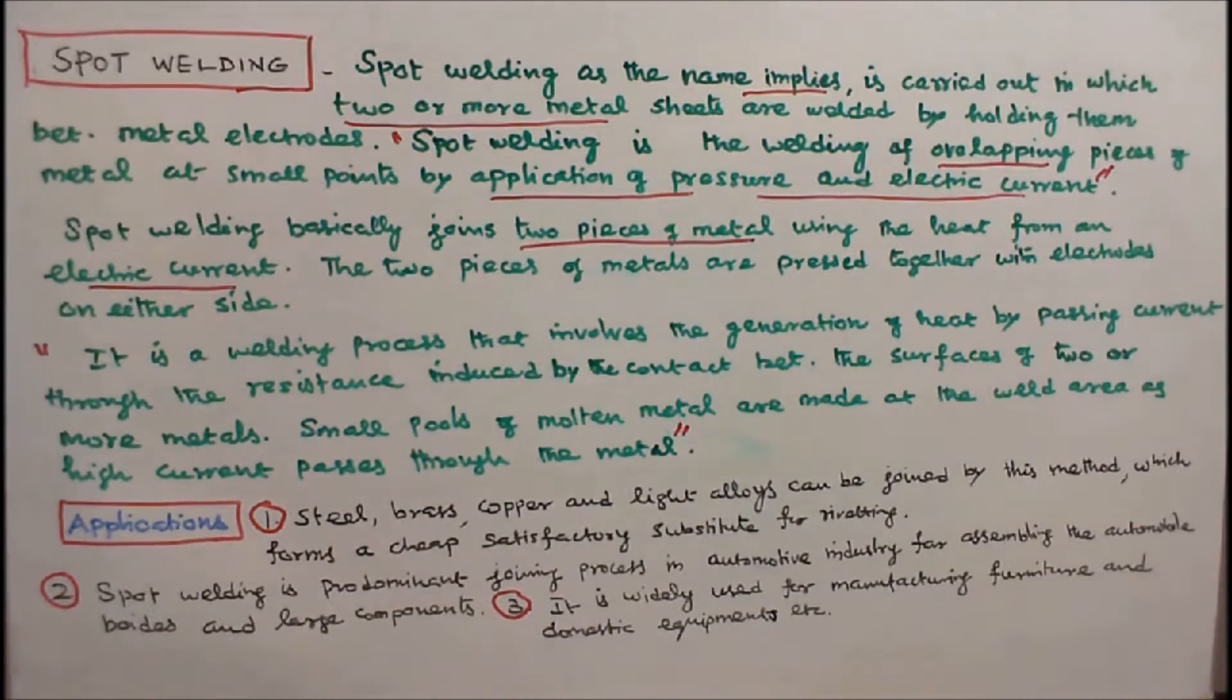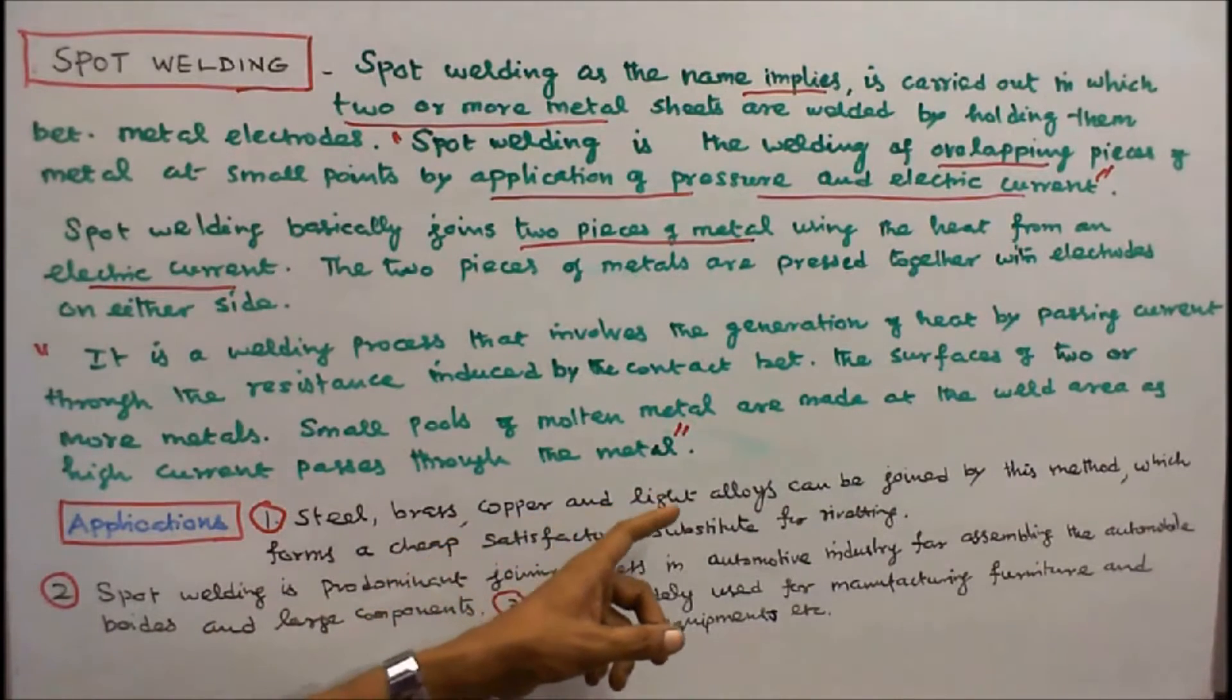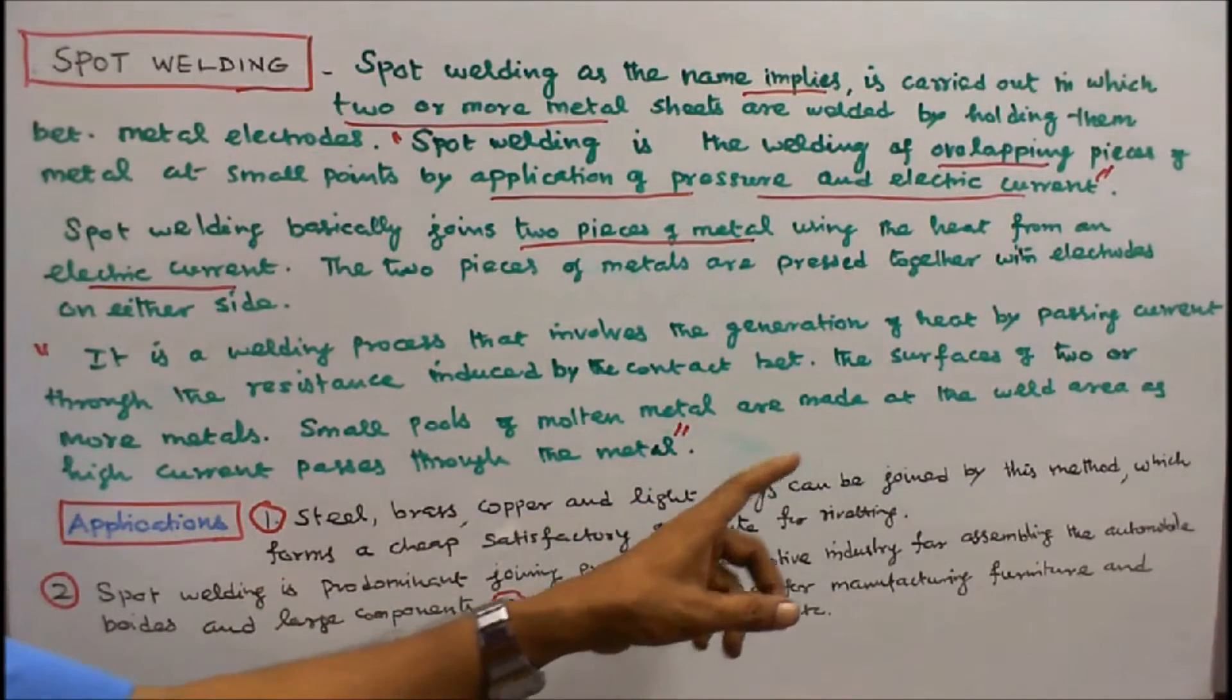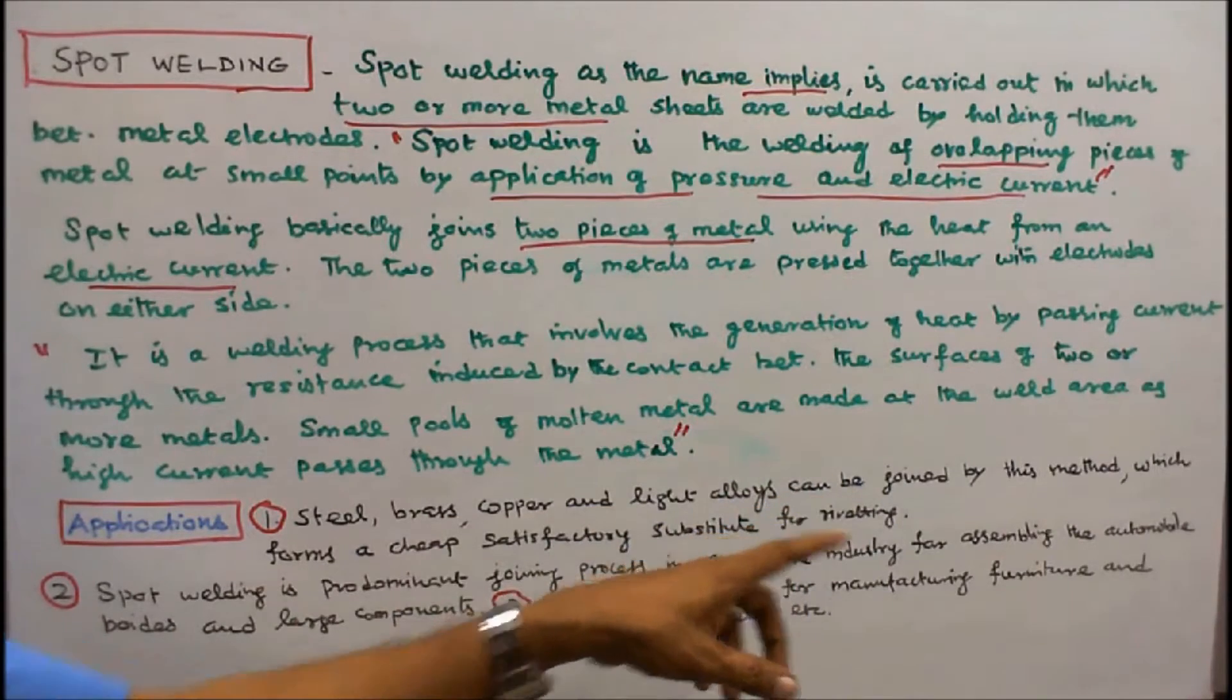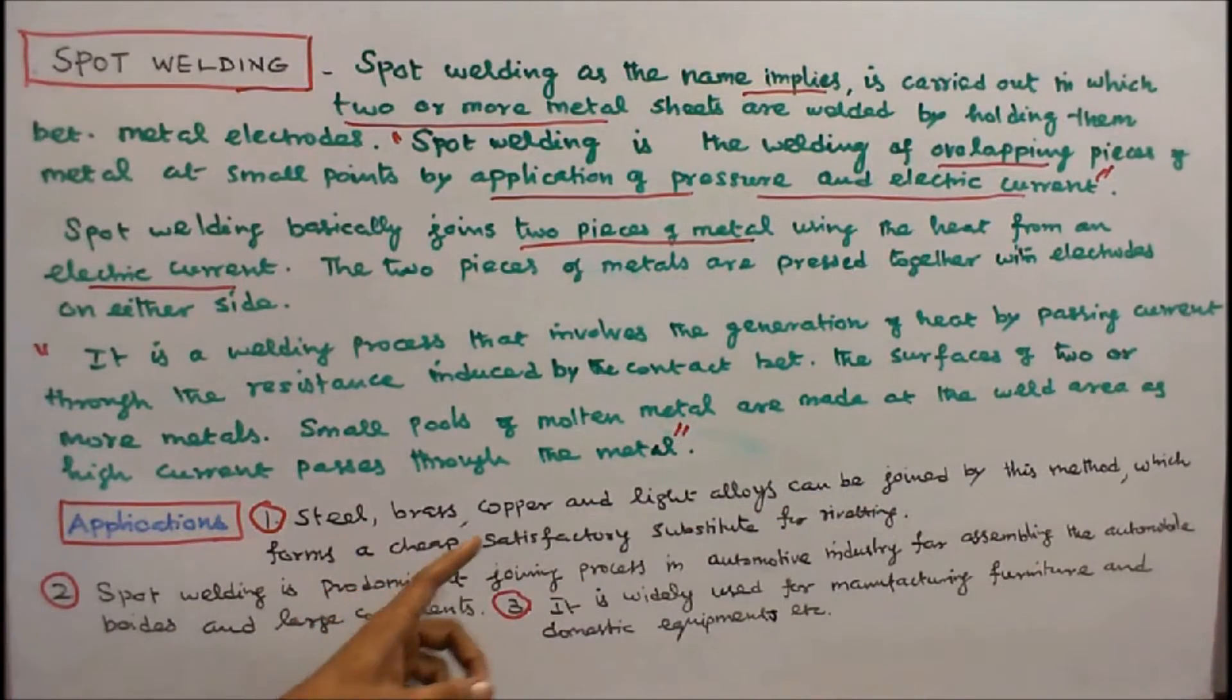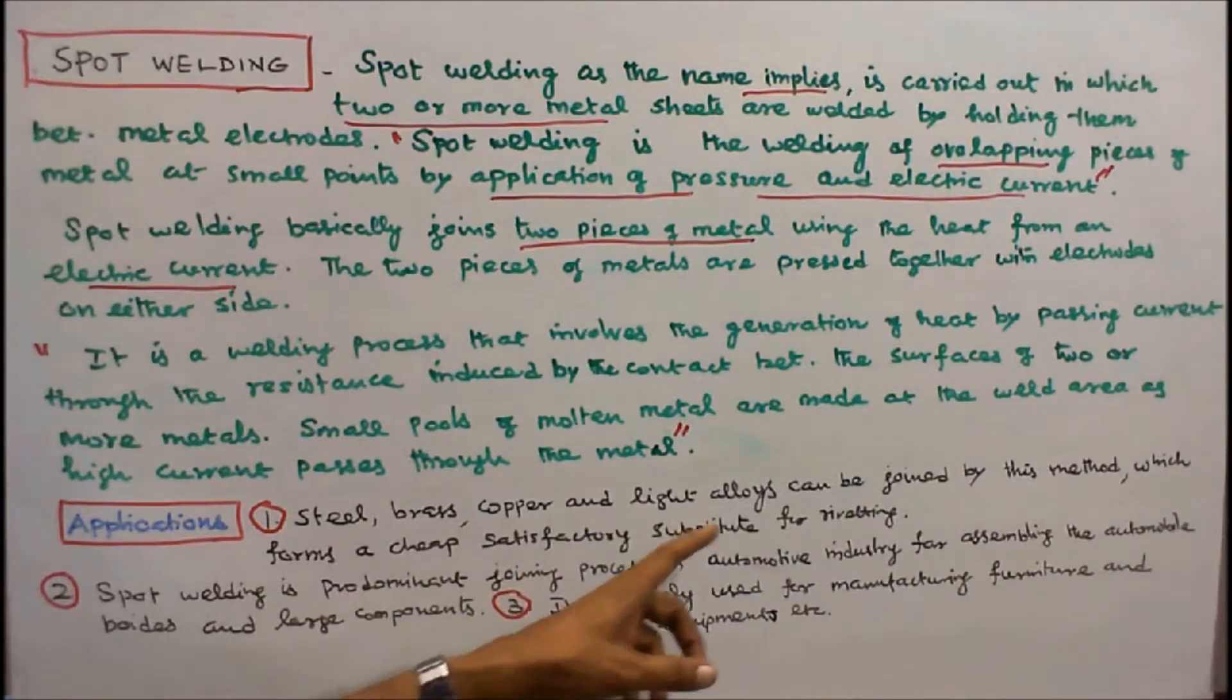Applications of spot welding are: number one, steel, brass, copper and light alloys can be joined by this method which forms a cheap satisfactory substitute for riveting.